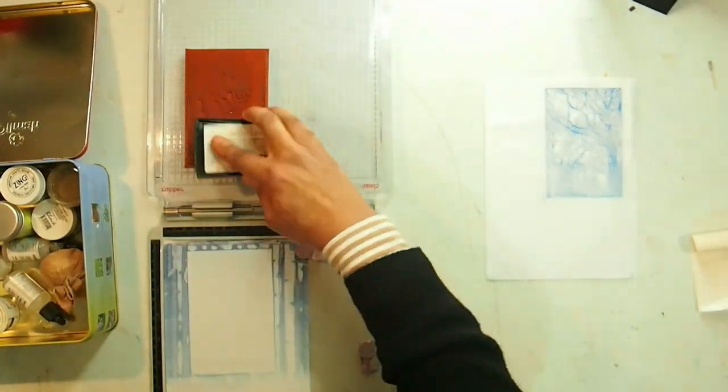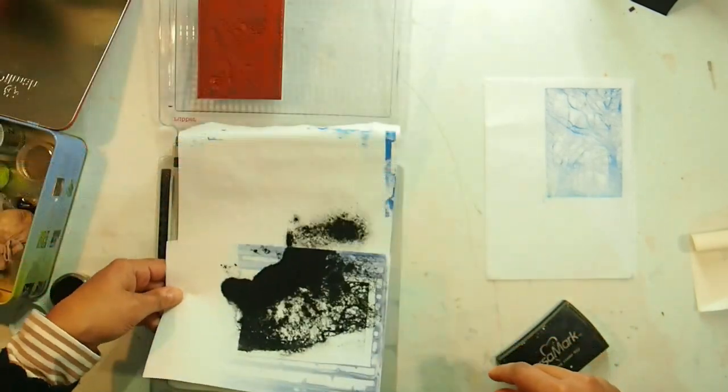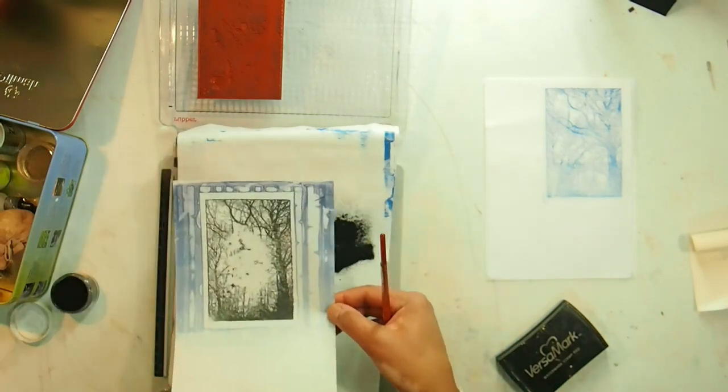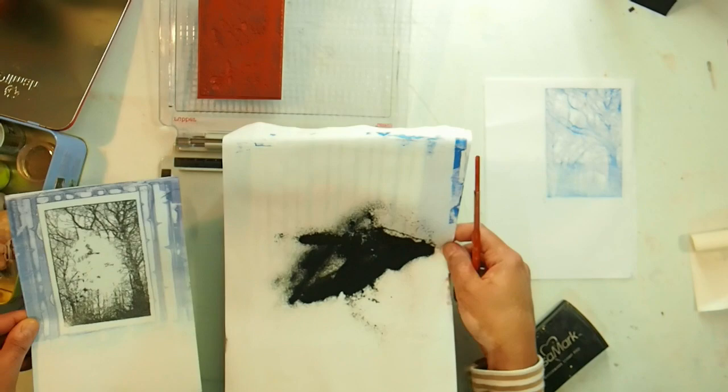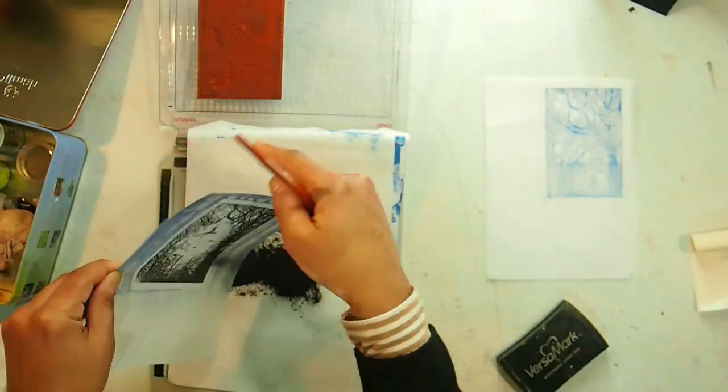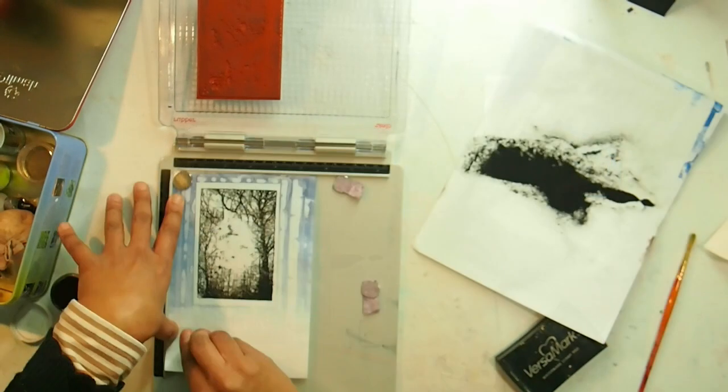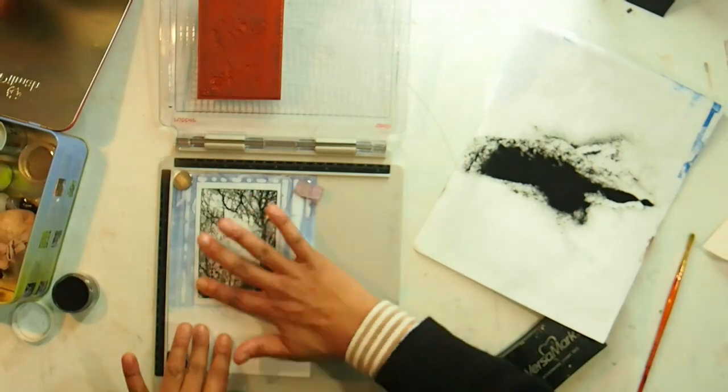As you see, I've put two layers of Versamark. I'm about to add my embossing powder and you see that the middle portion here did not take. Now, in previous years I would have thrown this away and been very frustrated and not been encouraged to do heat embossing but what I ended up doing was gone ahead and I heat set it. I put it exactly back where it was.